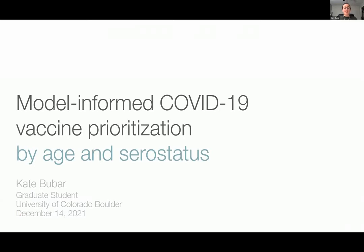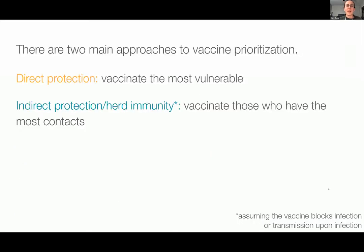The title for my talk today is Model-Informed COVID-19 Vaccine Prioritization. Specifically, my group has been looking at age and serostatus. Just to give a little bit of context, my group really started thinking about this back in summer of 2020. A lot of these ideas are commonplace now and have already been discussed in the workshop today, but I wanted to set the stage for how we approached this question of vaccine prioritization and the point of view that we were thinking about this problem.